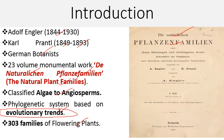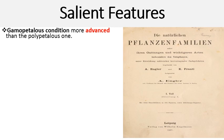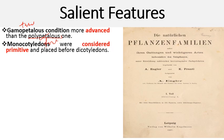The salient features of this system: they considered the gamopetalous condition as more advanced compared to the polypetalous one. Gamopetalous means floral parts are fused, while polypetalous means free petals — polypetalous is the more primitive condition while gamopetalous is the advanced condition. They also considered monocotyledons as primitive plants, placing them before dicotyledons.